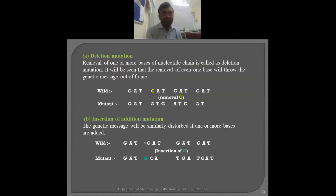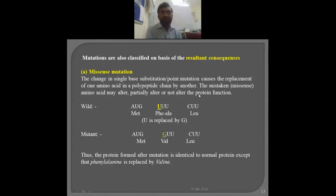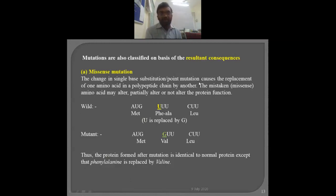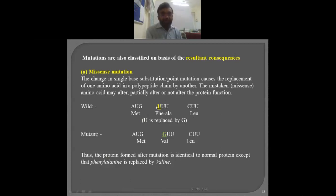Mutations are also classified on the basis of consequences — what happens as a result of the mutation. The first is missense mutation. Here there is a change in a single base substitution, also called point mutation. When only a single nucleotide is replaced, that results in the replacement of one amino acid in the polypeptide chain by another. For example, A-U-G codes for methionine, U-U-U codes for phenylalanine, and C-U-U codes for leucine. Suppose U is replaced by G — the new codon becomes A-G-U-U.